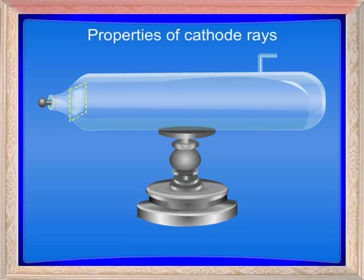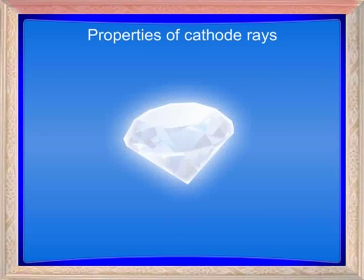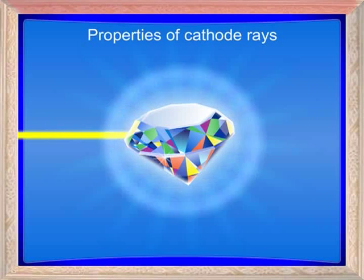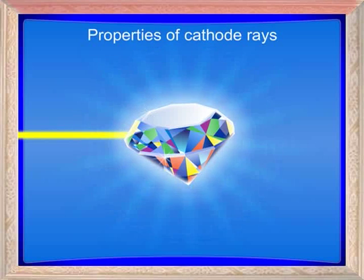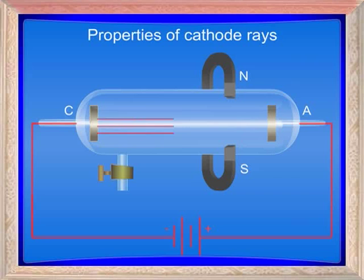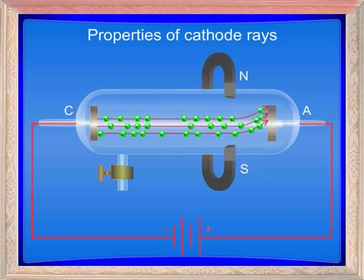Three, the rays produce fluorescence. When the rays are focused on substances like zinc sulfate, a green visible light is observed. When focused on diamonds, they exhibit all colors depending on the quality of the diamond. Four, the rays are deflected by a magnetic field, showing that cathode rays consist of particles.